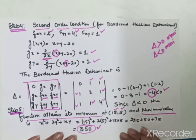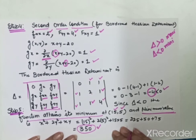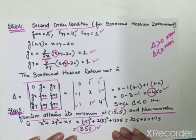So this is the way to solve constrained optimization problems. Practice with examples step by step and you will learn how to find maxima and minima values in two-variable constrained functions using Lagrange's formula. That's it for today, thank you.